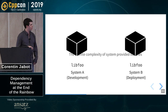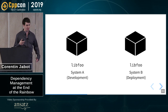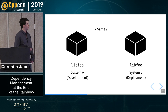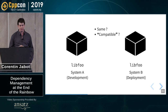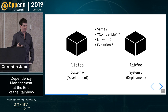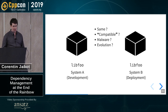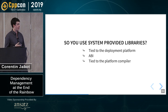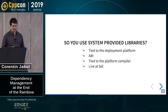Let's talk about system libraries. Say you have library foo on system A — your development environment — and you're trying to deploy on system B. You have this library present on both systems called library foo, but is it the same? Is it compatible? What does compatible even mean? Maybe it's some kind of virus and you're actually linking to a virus executed by your program. More importantly, how does that system evolve? The library on system B can change and you have absolutely no control over it. If you use system-provided libraries, you are tied to the deployment platform, which means you have to care about ABI, which means you are tied to the platform compiler.